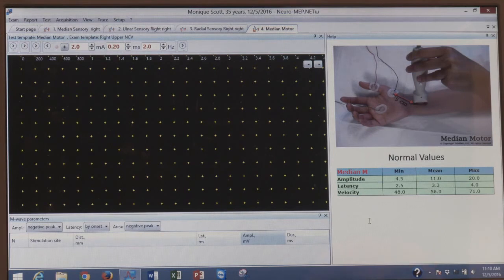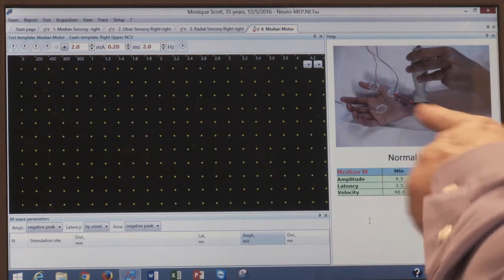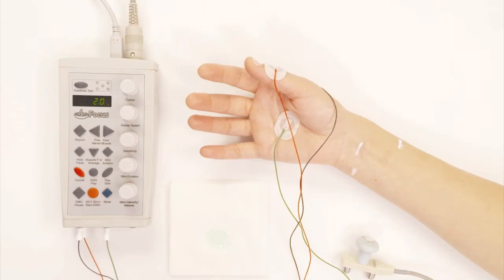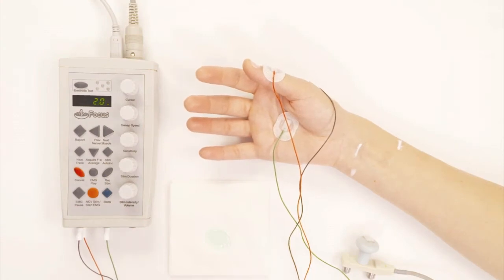You can see there that the black electrode that we put on the muscle is going to be at the base of the thumb, and the red electrode, the reference electrode, is going to be on the thumb itself, and the green electrode, the ground, remains exactly where it was.